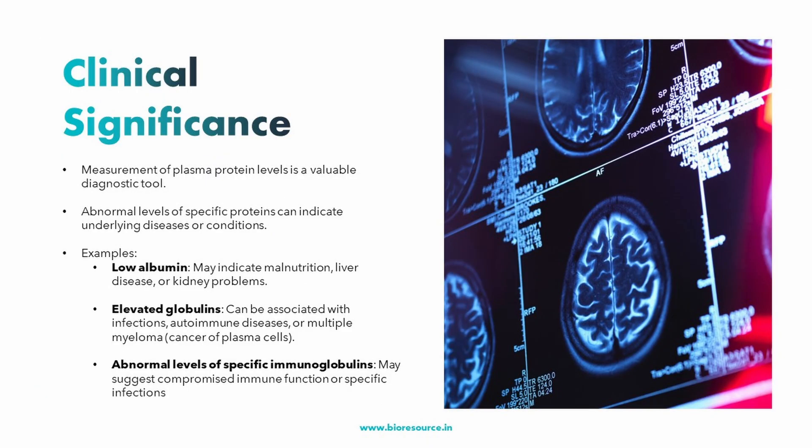Let's look at the clinical significance of plasma proteins. Measuring the levels and types of plasma proteins in the blood is a valuable diagnostic tool in clinical settings, because deviations from normal ranges can provide clues about underlying health conditions. For example, low albumin levels might indicate malnutrition, liver disease, or kidney problems related to protein loss. Elevated globulin could be associated with infections, autoimmune disease, or multiple myeloma. Abnormal levels of specific immunoglobulins might suggest compromised immune function or specific infections requiring targeted treatment.